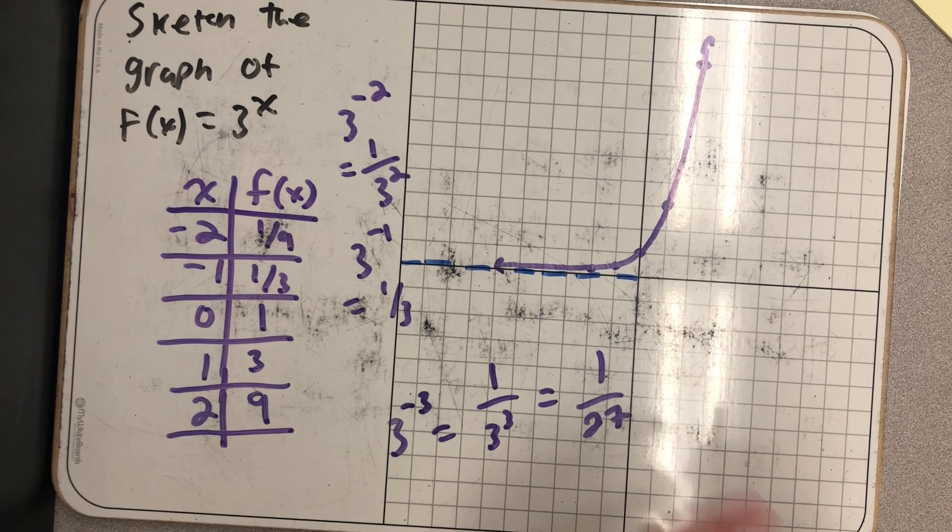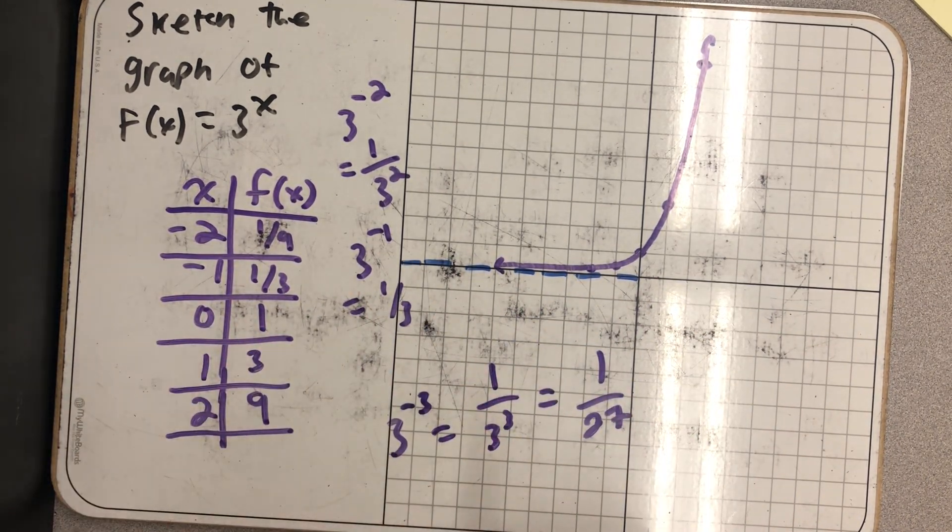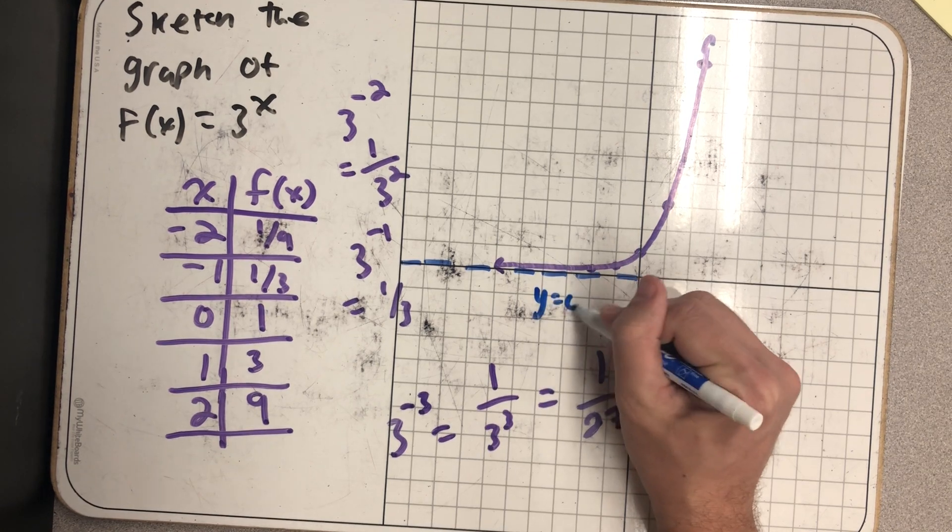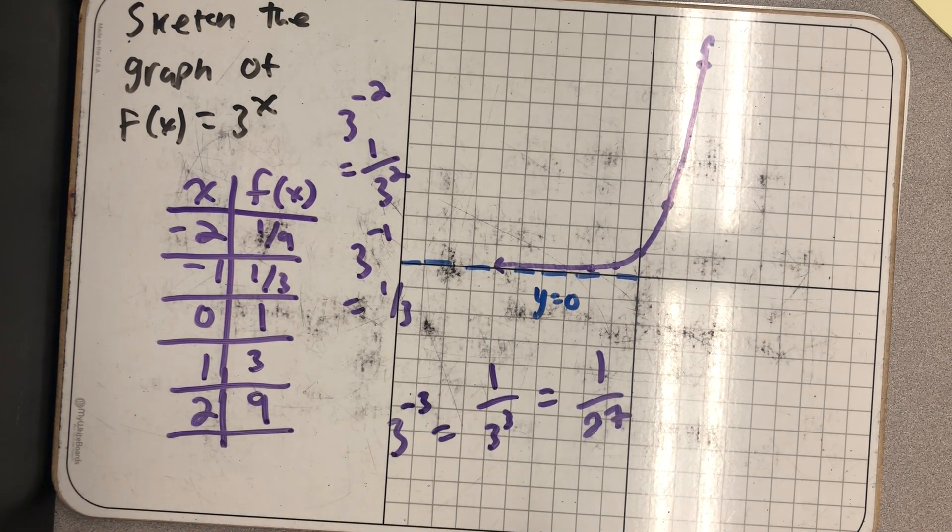Unlike rational functions and exponential functions, a horizontal asymptote only talks about one side of it. The left-hand side is getting closer to that horizontal asymptote.